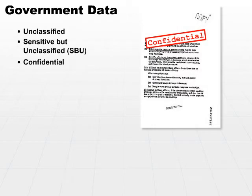Confidential information does require that the individual needing to access it be cleared, as well as have a need to know. It's the first category requiring both a security clearance and a need to know. Confidential information, if leaked or divulged to the general public, could cause some harm.